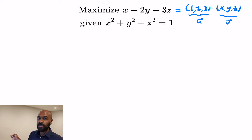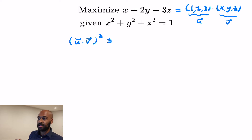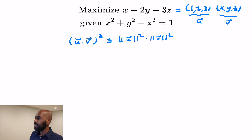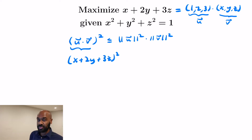Let U be the vector (1, 2, 3) and V be the vector (X, Y, Z). Using Cauchy-Schwarz, we can get an upper bound in terms of the lengths of U and V. Cauchy-Schwarz says (U·V)² ≤ ‖U‖² · ‖V‖², and by construction U·V is X + 2Y + 3Z, so (X + 2Y + 3Z)² ≤ ‖U‖² · ‖V‖².